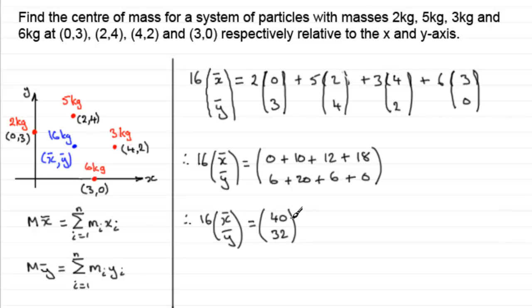Divide now throughout by 16, and you end up with (x bar, y bar) equals 40 divided by 16, which is 2.5, and 32 divided by 16 is 2. You could leave it as a column vector, or if you wanted it as a coordinate (x bar, y bar), then all we need to do is just write it as (2.5, 2). Either way, leave it up to you to decide which way you want to present it.